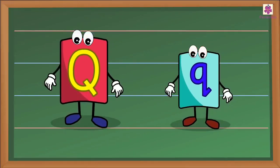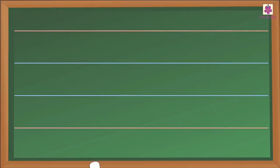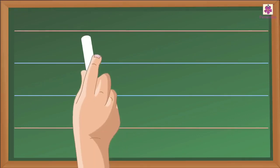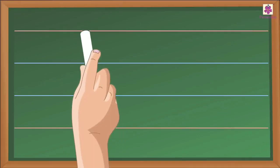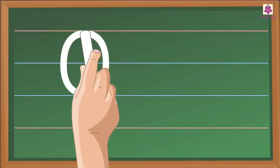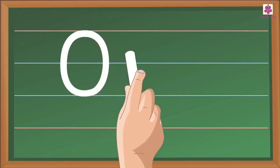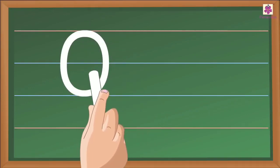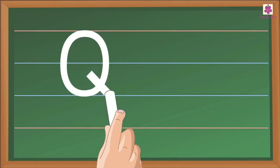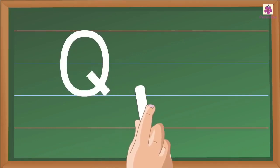Good morning. Today we are going to learn Q. Capital Q. Start from the top and make the capital letter O. Then from inside the O, make a slanting line to the right. Capital Q.